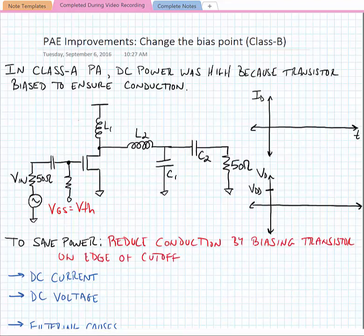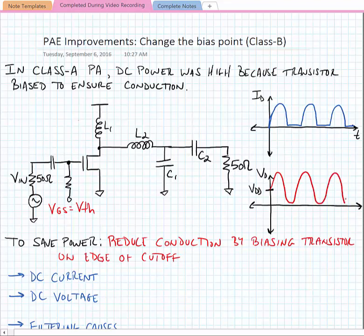So if we look at the current waveforms for the class B amplifier, we would see that the current would have brief periods where it has some kind of sinusoidal-like conduction and then it cuts off. And then in the next period, sinusoidal-like conduction and then it cuts off. And this would repeat over and over again. And if we were to look at the drain voltage because of the filtering, we would see a sinusoidal drain voltage with the same period as the drain current.